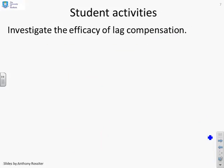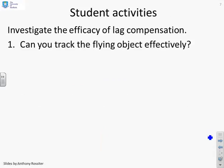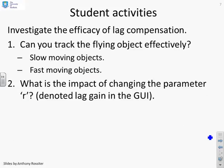So some student activities. Investigate the efficacy of lag compensation. Can you track the flying object effectively? So you could try slow moving objects and fast moving objects. What's the impact of changing the parameter r? Can you actually see the impact? Try small r, try large r.